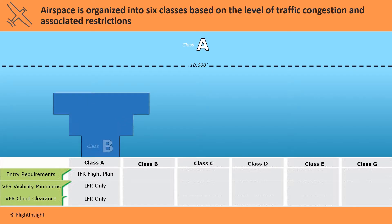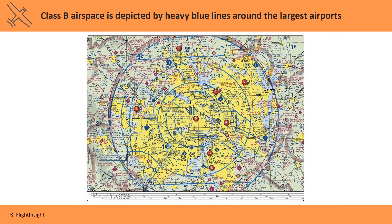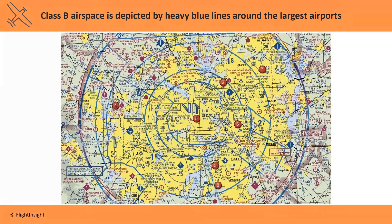Class B, or Bravo, is very congested airspace around the busiest airports in the country. It resembles an upside-down wedding cake with three or more tiers because aircraft arriving and departing from the busy airports are flying lower the closer they are to the airport. All flights must get a clearance from air traffic control to operate in Class Bravo. The minimum visibility required is three statute miles, and aircraft must remain clear of any clouds. Class B airspace is depicted by heavy blue lines around the largest airports.